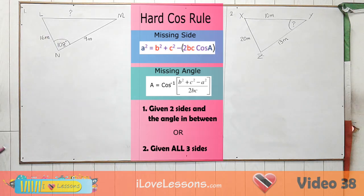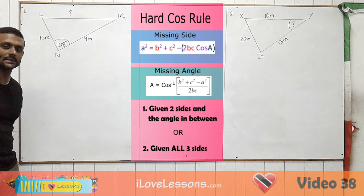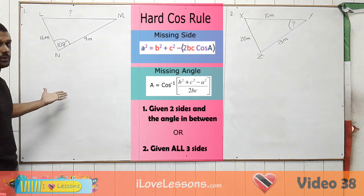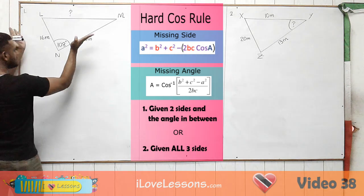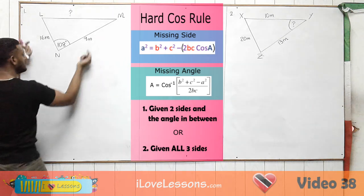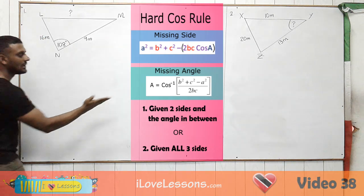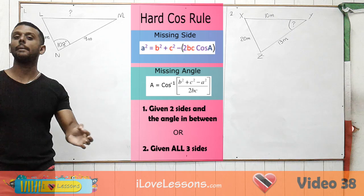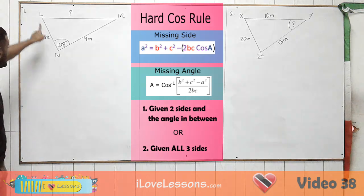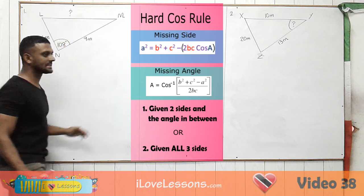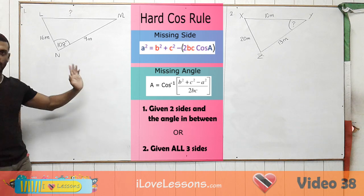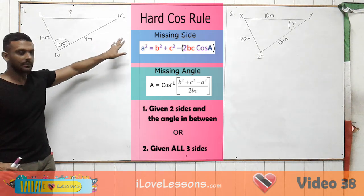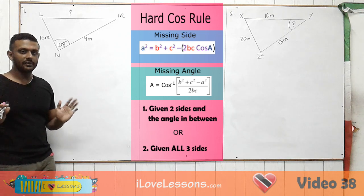Our first question is a non-right angle triangle, so normal sine, tan, cosine, or Pythagoras theorem would not work. We're given two sides — the 16 and the 9 — and the angle in between those two sides, so we are allowed to use the hard cosine rule. The question mark tells us we're trying to find the length of a missing side, so we'll be using the missing side formula.